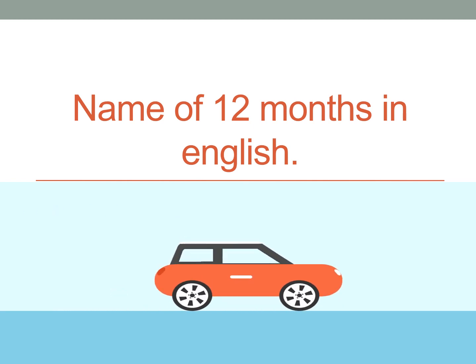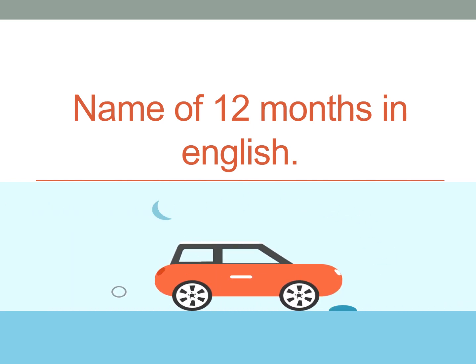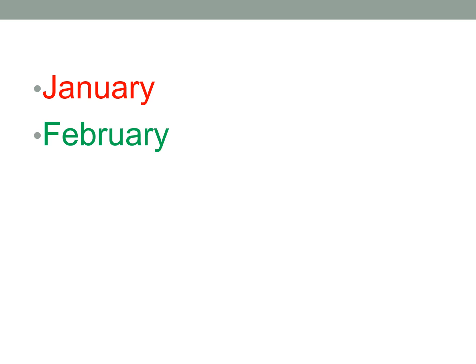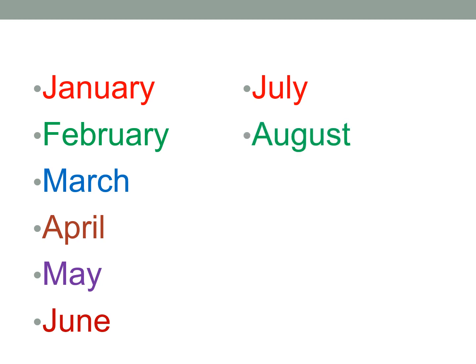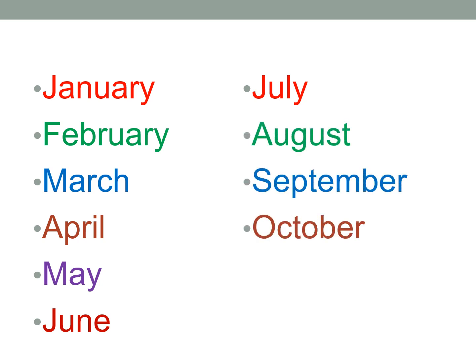Now we will say the names of the 12 months in English. January, February, March, April, May, June, July, August, September, October, November and December.